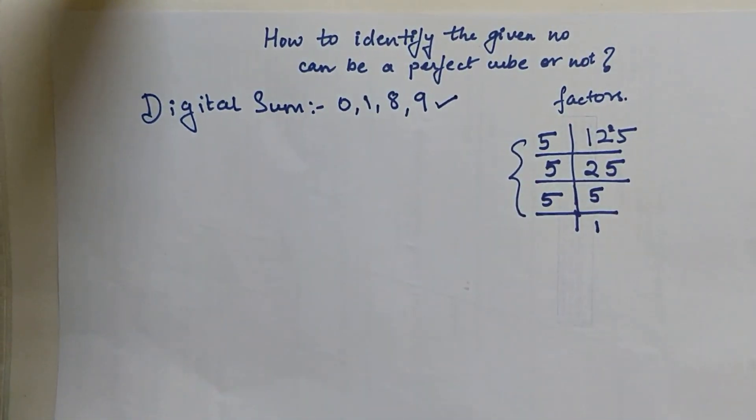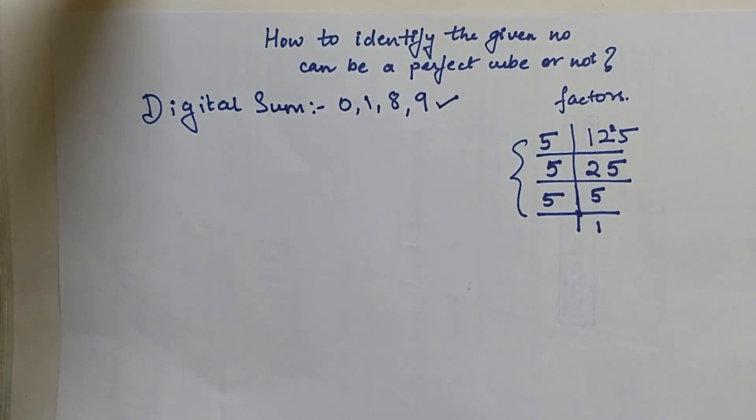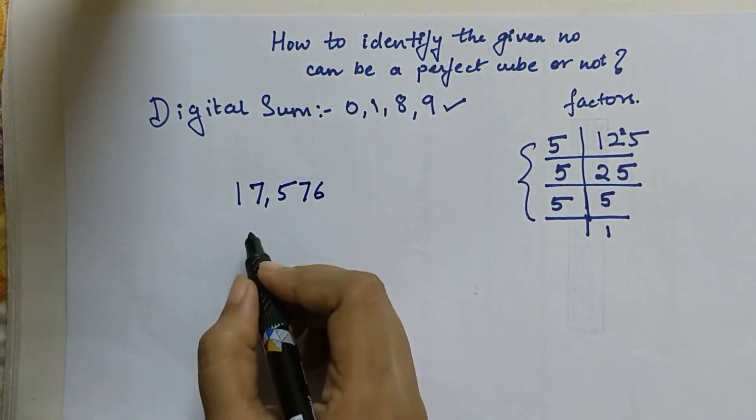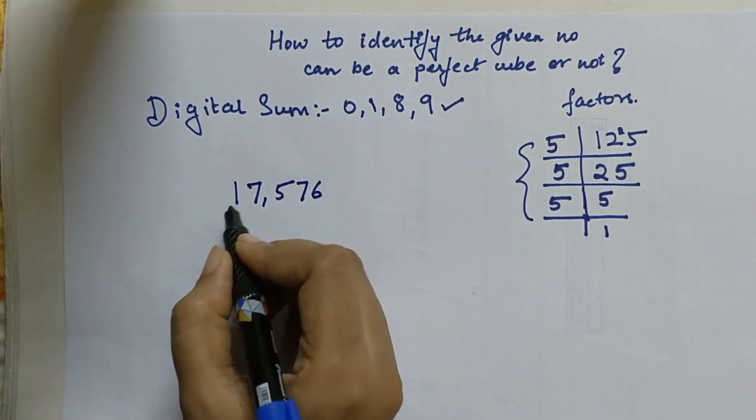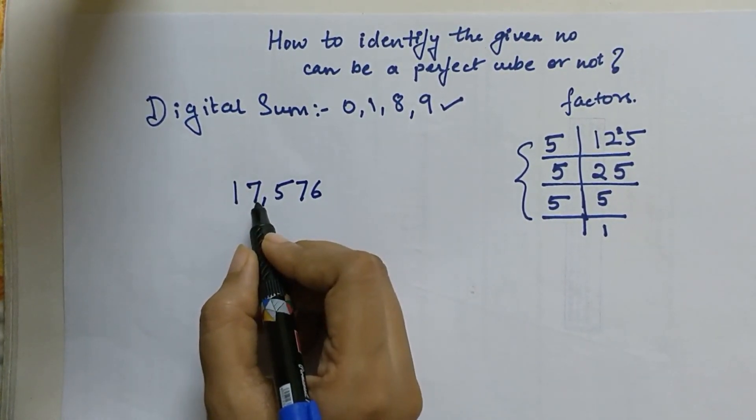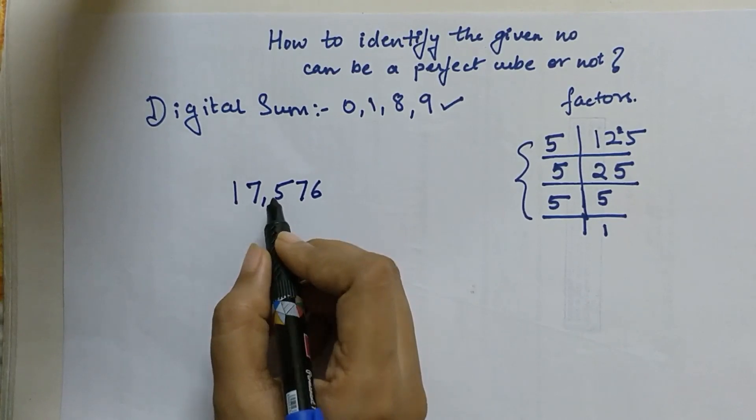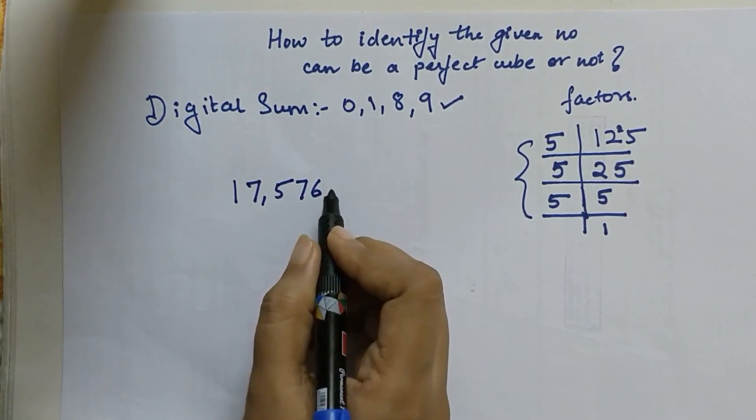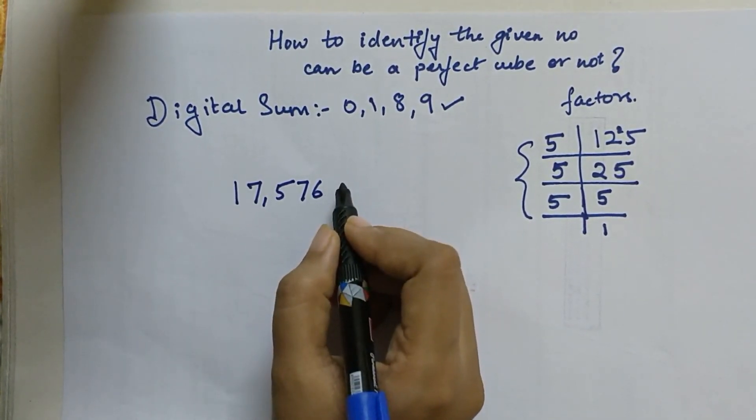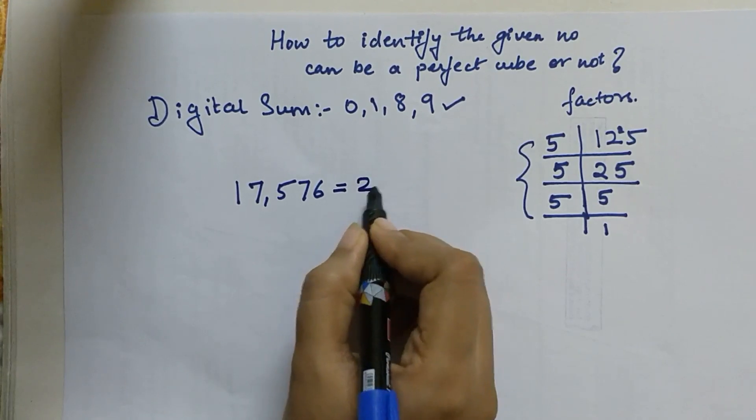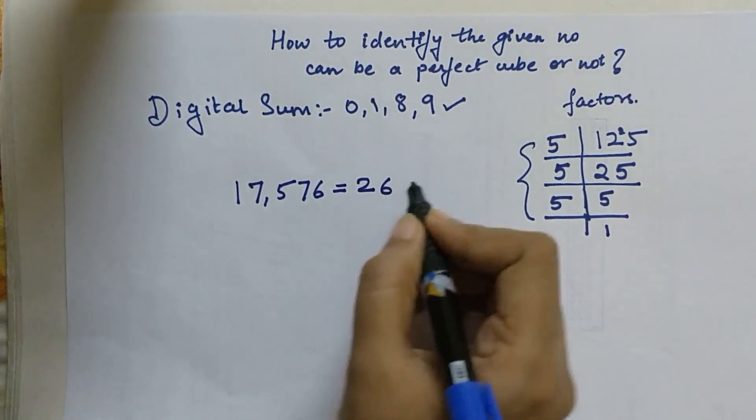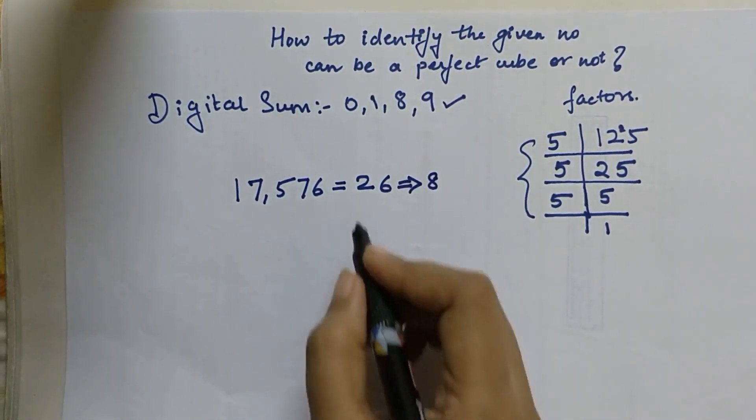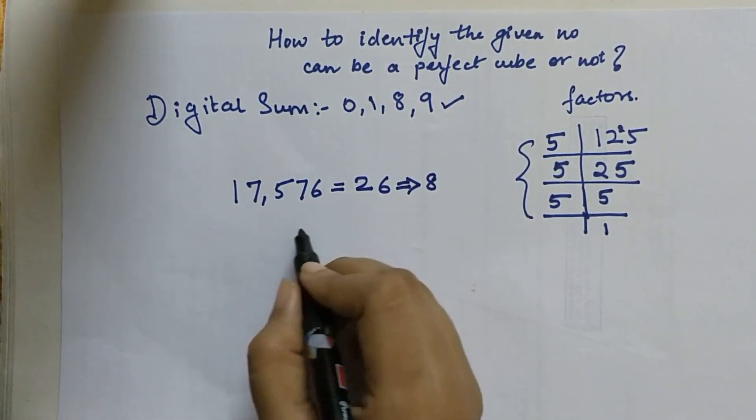Let us take for example 17576. Over here my digital sum is 1 plus 7 is 8, 8 plus 5 is 13, 13 plus 7 is 20, and 20 plus 6 is 26. So when I add the digital sum which I get is 26, and when I add these two numbers my digital sum comes as 8.